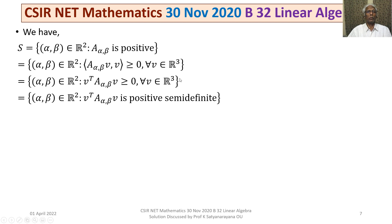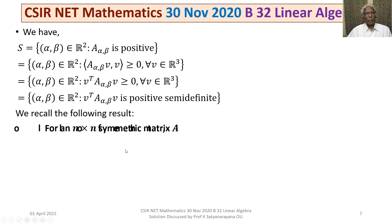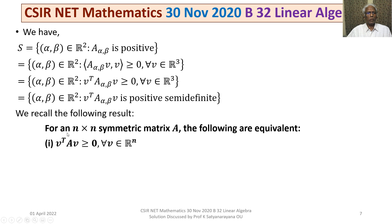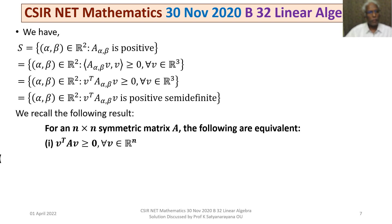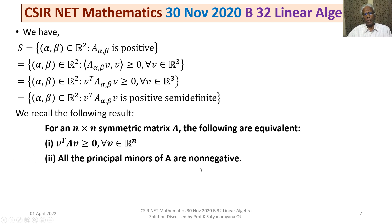The quadratic form is positive semi-definite because it is greater than or equal to 0 for all V in R³. We now recall the following result: for an n×n symmetric matrix A, the quadratic form V^T·A·V ≥ 0 for all V in R^N is equivalent to all the principal minors of A being non-negative.